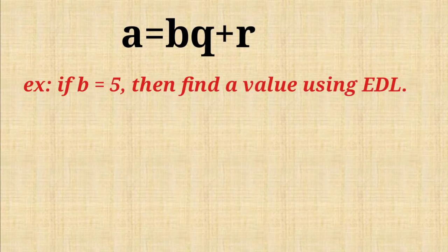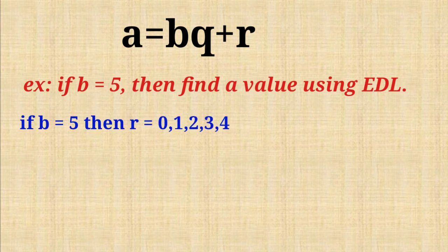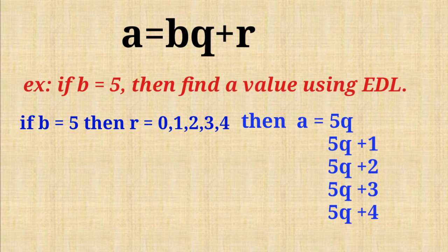Example: If B equals 5, then find A value using Euclid's division lemma. If B equals 5, then remainder is always less than 5. So R equals 0, 1, 2, 3, 4. Then A value is 5Q or 5Q plus 1 or 5Q plus 2 or 5Q plus 3 or 5Q plus 4.